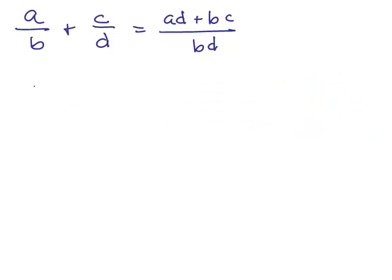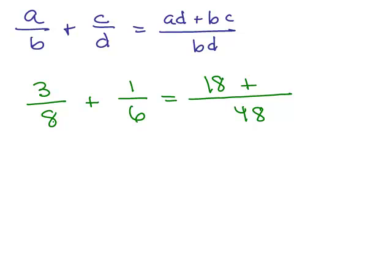So let's do this problem. 3 eighths plus, say, 1 sixth. If we use this method, we multiply the denominators together, which is 48. Put the plus sign on top since it's a plus. So we do the diagonals. 3 times 6 is 18. And 8 times 1 is 8. And so when I add the numerators, I get 26 48ths. This is not reduced. So then we have to reduce, divide in top and bottom by 2. We get 13 24ths.